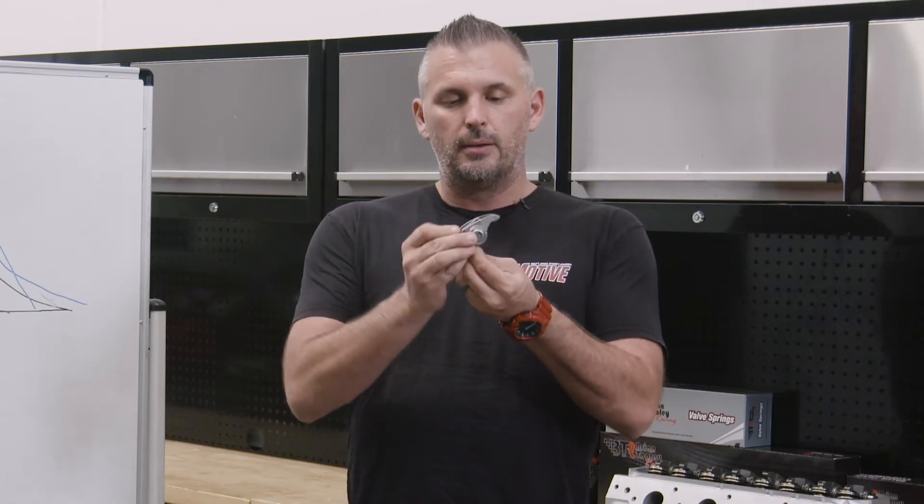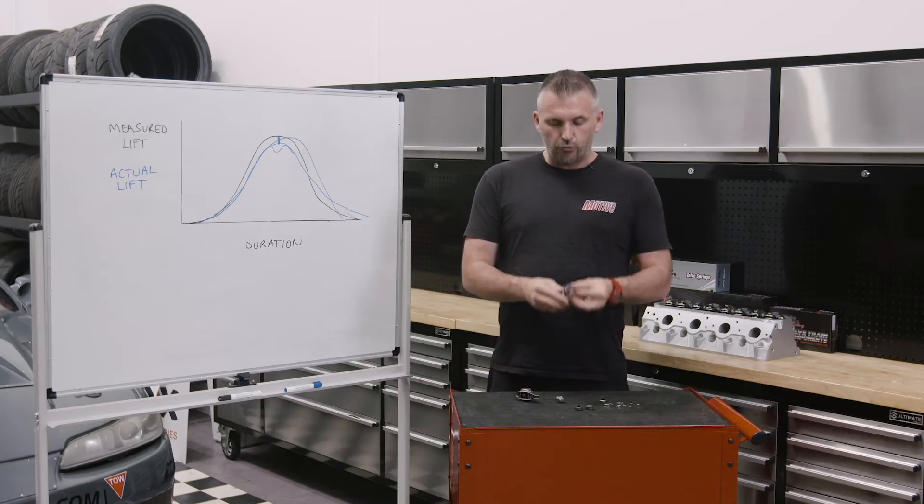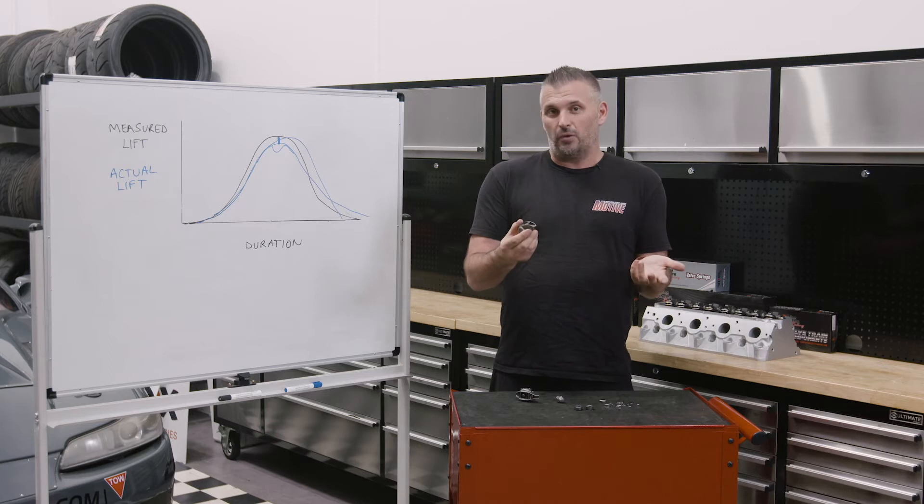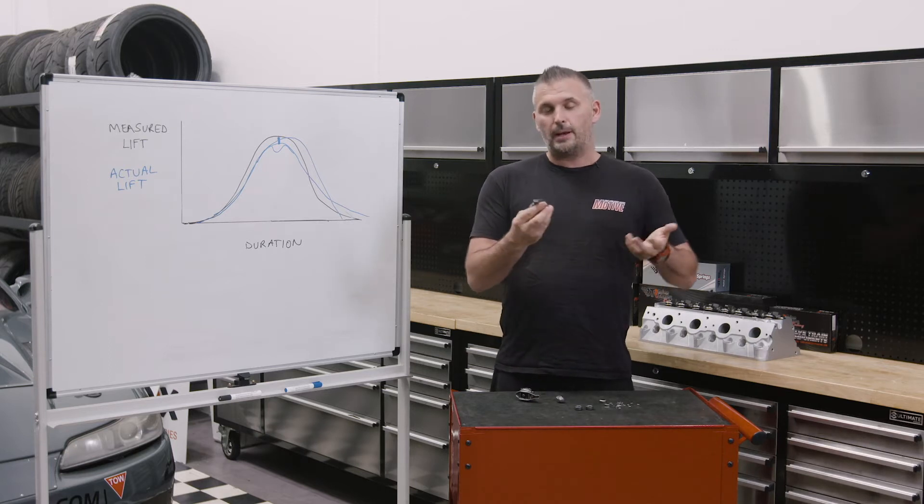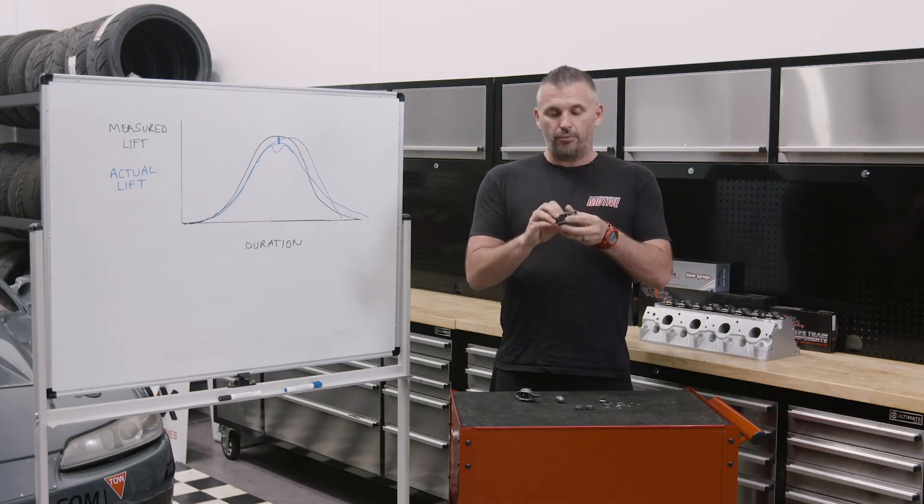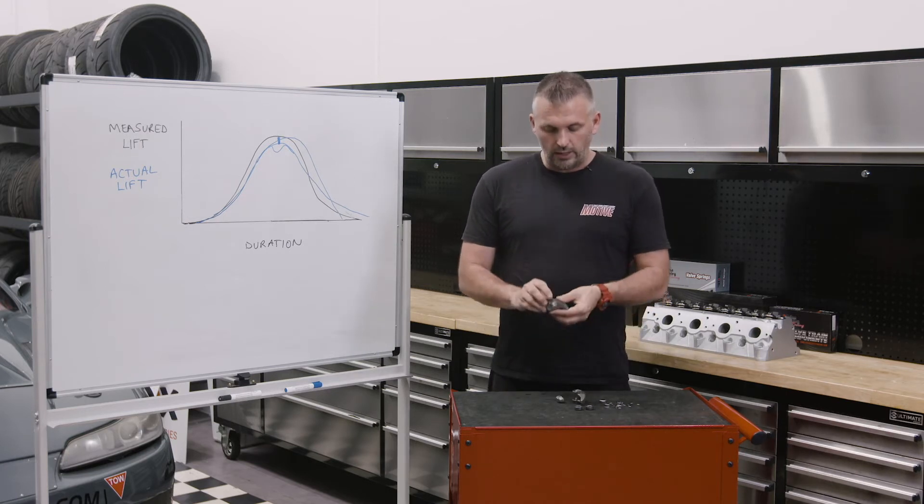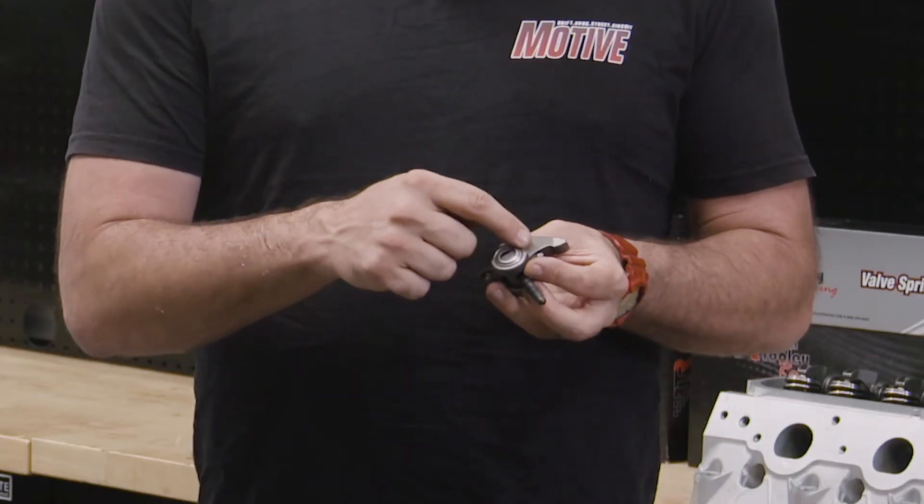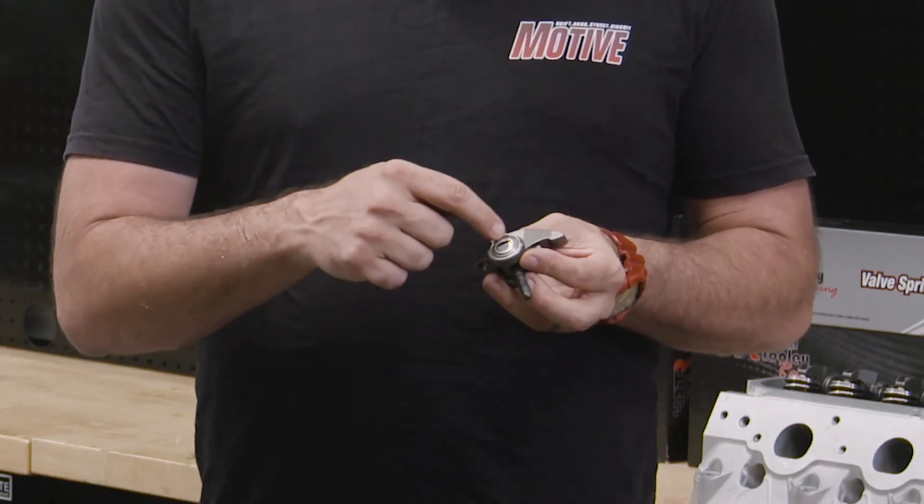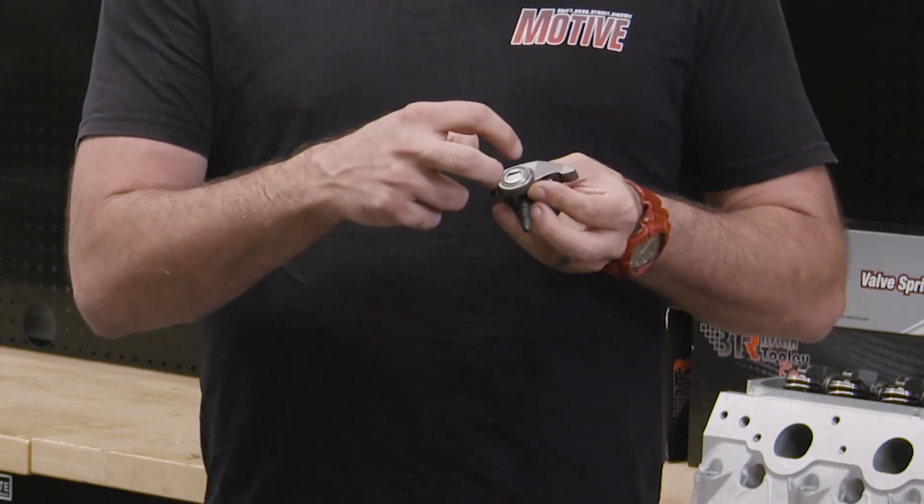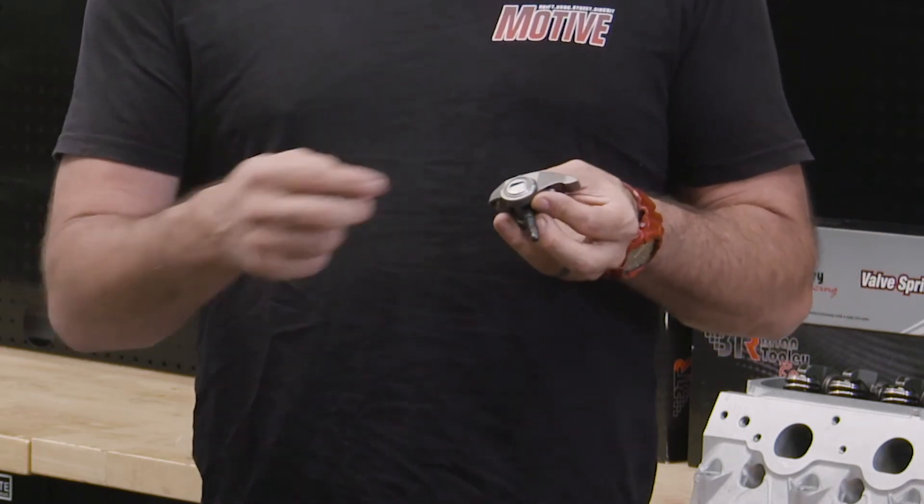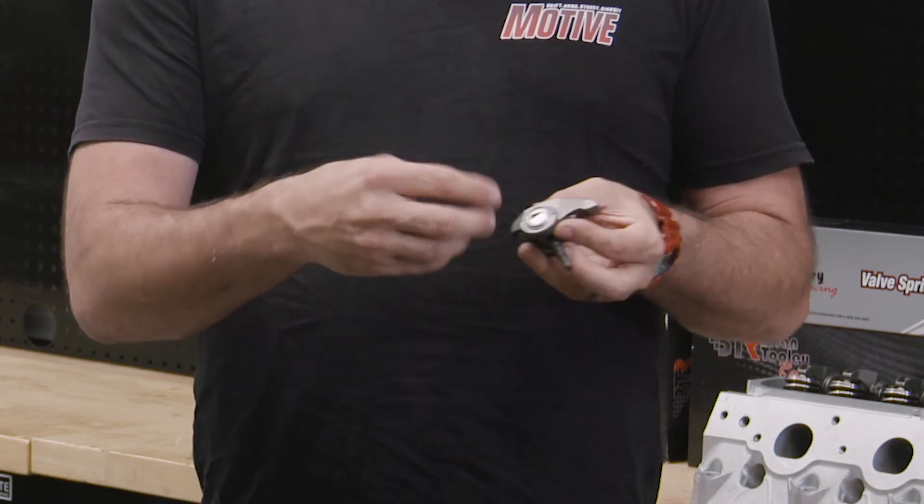The trunnion is what the rocker pivots on and also attaches it to the rocker stand. The actual rocker itself in an LS isn't all that bad. They can cop a fair bit of power and they're a pretty good design from factory. Quite often you don't need to upgrade the rocker, but you do need to upgrade the trunnion. If you have a look in here, where the needle roller bearing sits around the actual trunnion, these with a bit of wear or extra load, extra RPM, can expand and then fail.